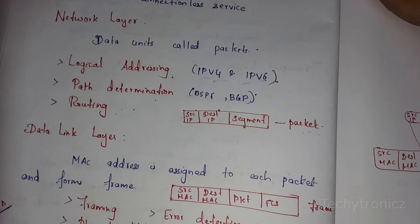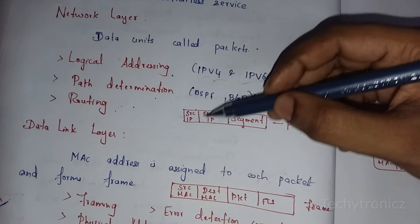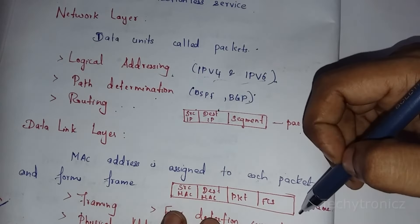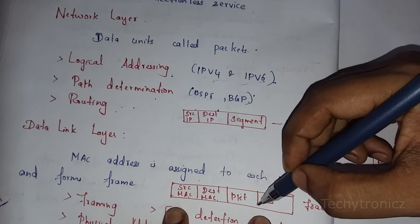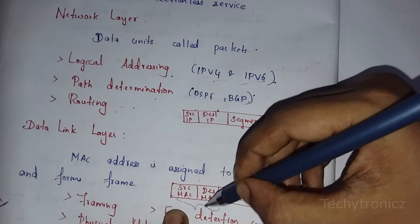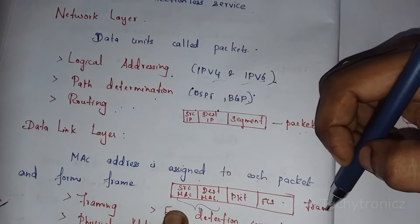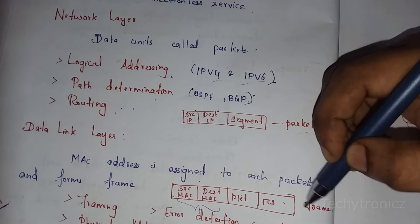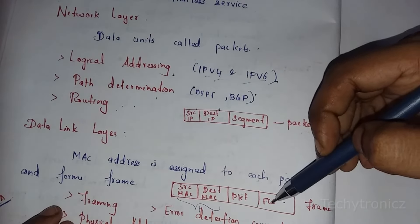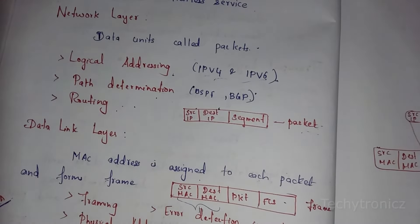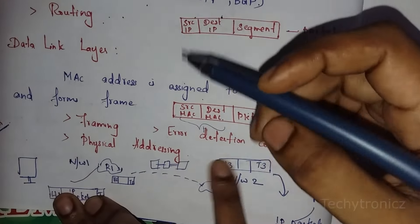The next layer is the data link layer. When a message comes from the network layer as a packet, in the data link layer it adds the individual source MAC address and destination MAC address to the packet — this is called the header and trailer. In the trailer, a checksum is added to detect errors. The total unit is called a frame. So framing is the key function of the data link layer. Another function is physical addressing, and also error detection and correction.